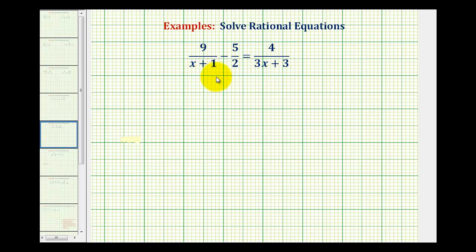We're going to rewrite each fraction and make sure the denominators are factored. The quantity x plus 1 does not factor, so the first fraction stays 9 divided by the quantity x plus 1 minus 5 over 2. This equals 4 divided by, well the quantity 3x plus 3 does have a common factor of 3, so we can write this as 3 times the quantity x plus 1.